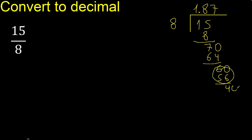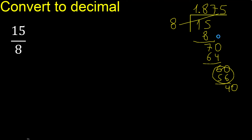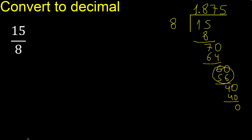Always complete with 0. Bring down: 40. Divide by 8 — multiply by which number. Multiply by 5 is exact: 40. Subtract: remainder is 0. Therefore finish.